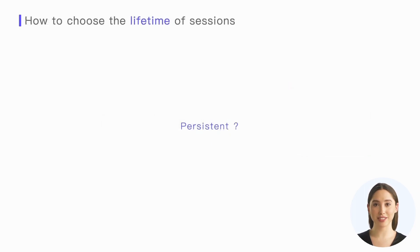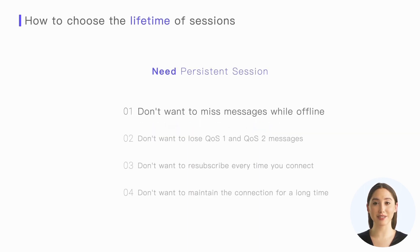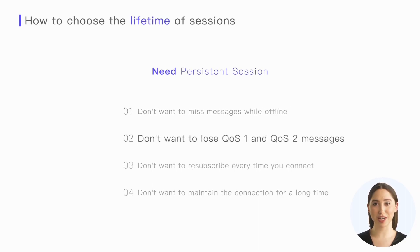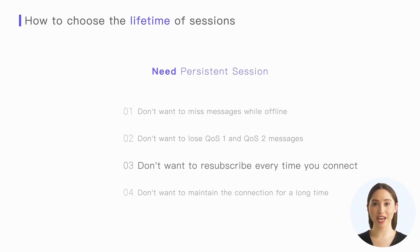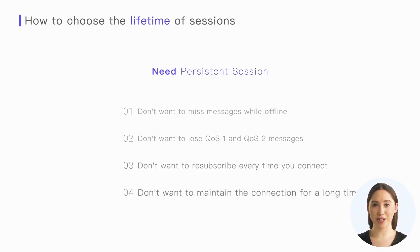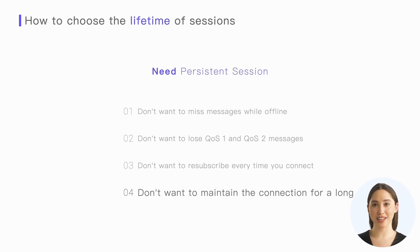Now let's summarize when we need to use persistent sessions and when we can do without them. First, if we don't want to miss any messages while offline, we should use persistent sessions. Second, if we don't want to lose QoS1 and QoS2 messages, we should also use persistent sessions. Third, if we want to avoid reestablishing subscriptions every time we connect and aim for quick communication restoration upon connection, we need persistent sessions. Fourth, if our low-power devices need to enter sleep mode regularly, don't want to maintain connections for extended periods, and don't want to perform subscription operations upon each wake-up, we can utilize persistent sessions.